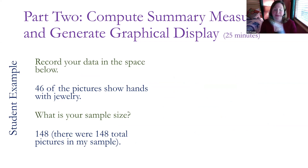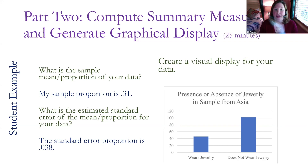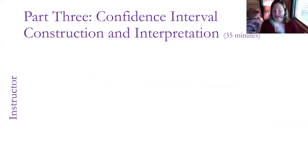Here is our student example again. They counted how many pictures had jewelry, according to their definition, out of the total sample size, and then they created a basic visual display and calculated the appropriate summary statistics. Once we have this, we're able to go on to part three, which is the crux of the activity: the confidence interval construction and interpretation.